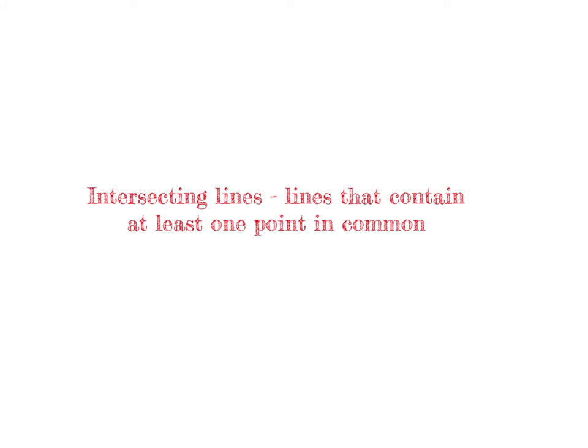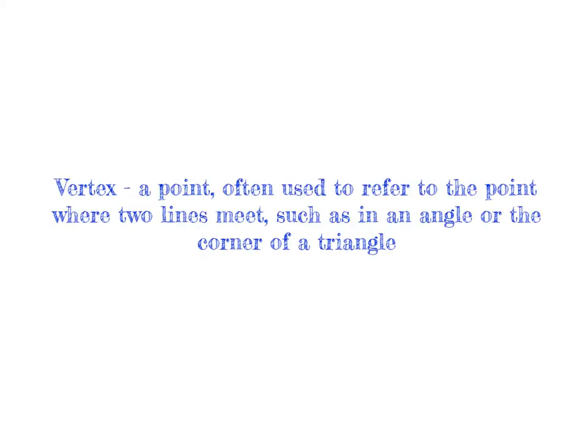Next, we have intersecting lines, and intersecting lines are lines that contain at least one point in common. Next, we have vertex, and a vertex is a point often used to refer to the point where two lines meet, such as an angle or the corner of a triangle.